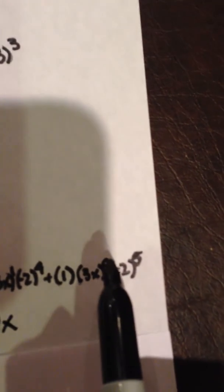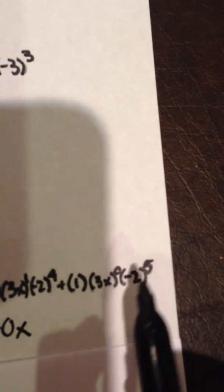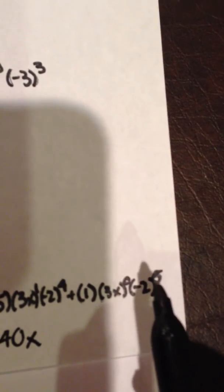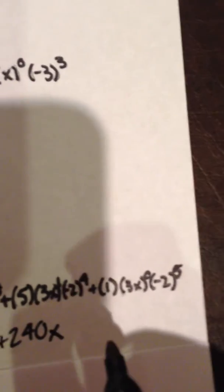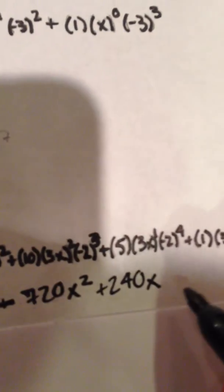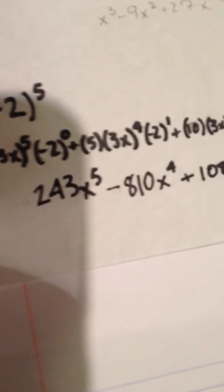And our final terms are 3x to the zero power times one. Those are both ones. They cancel out. Negative two to the fifth power is negative 32. We don't have to change it because it's multiplied by two ones. Negative 32. And this is your final expanded binomial.